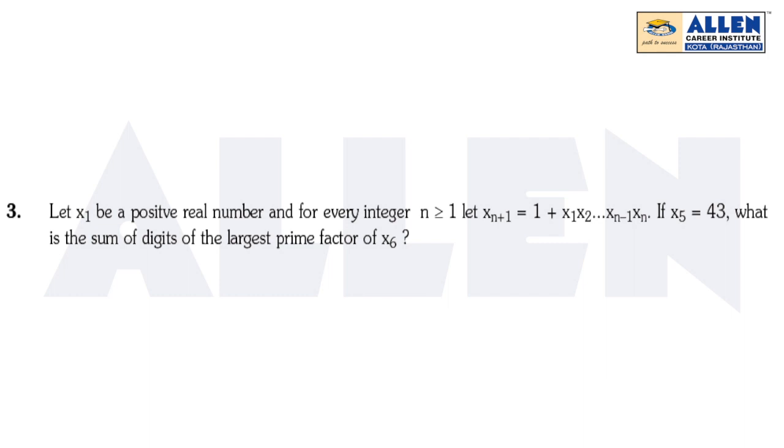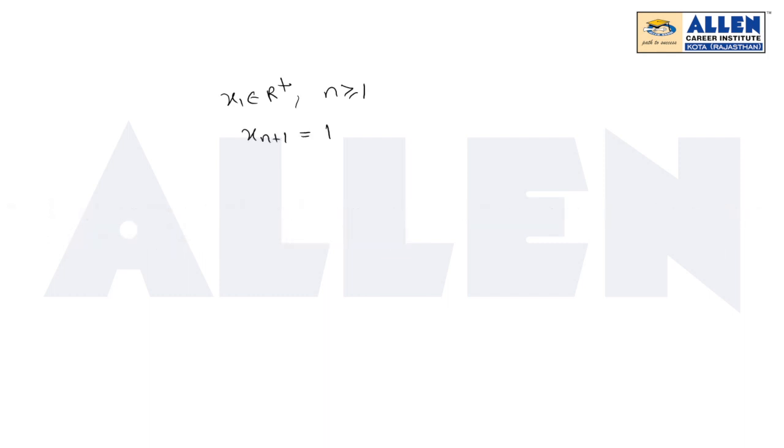Now we will discuss question number 3. Let x1 be a positive real number and for every integer n greater than or equals to 1, xn+1 is defined as xn+1 equals 1 plus x1 x2 up to xn, and it is given that x5 equals 43. We have to calculate the sum of digits of the largest prime factor of x6.